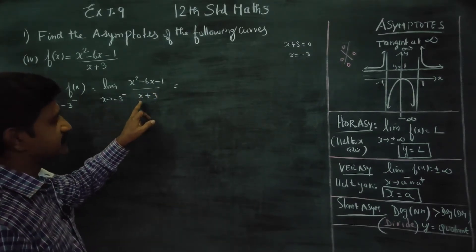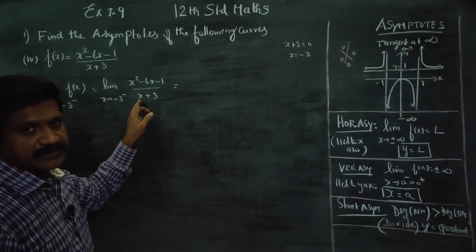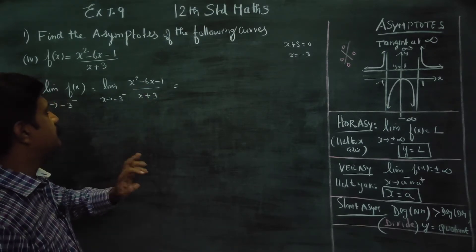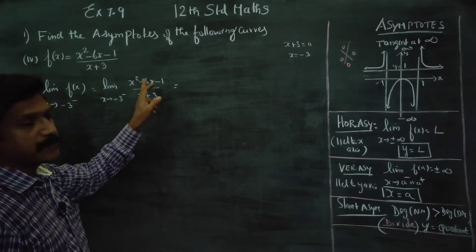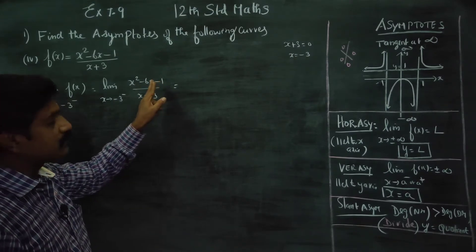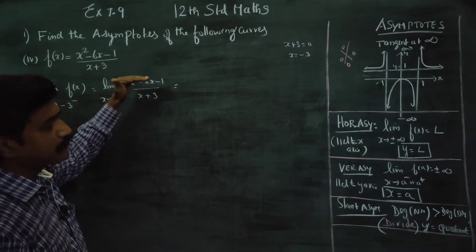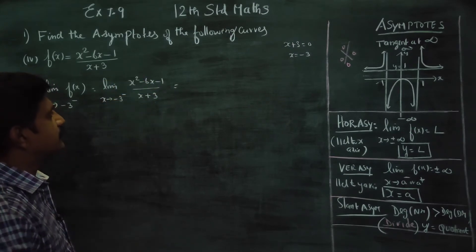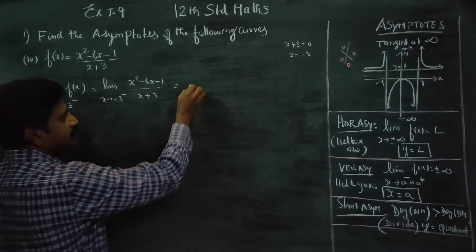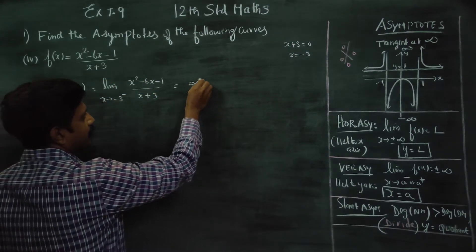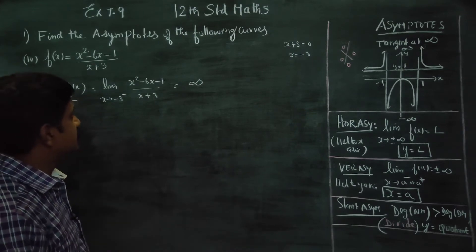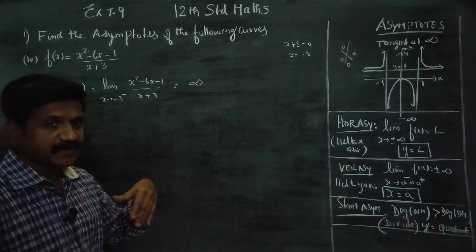Substituting x = minus 3: minus 3 plus 3 gives 0, so we get 0 in the denominator. The problem is, if you have a value approaching from the left giving plus infinity in the numerator, you end up with minus infinity.